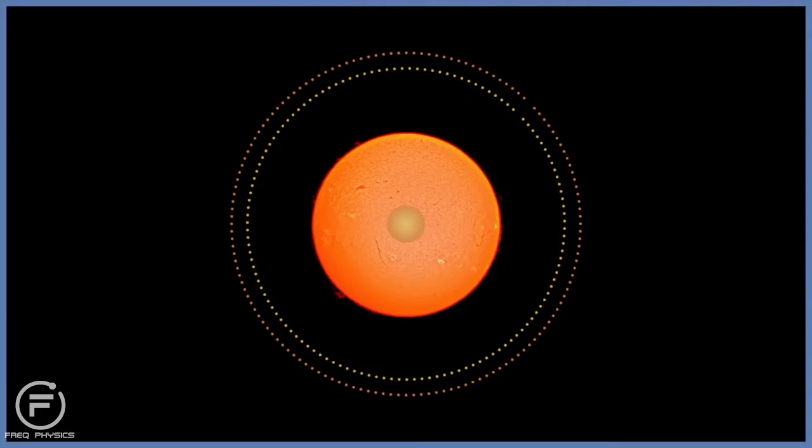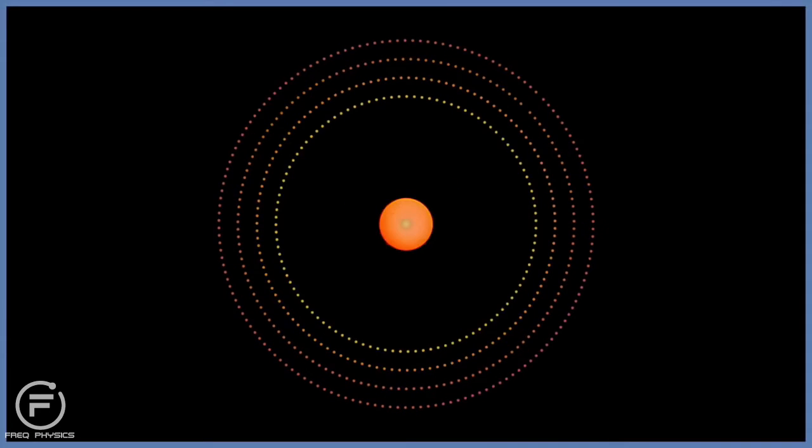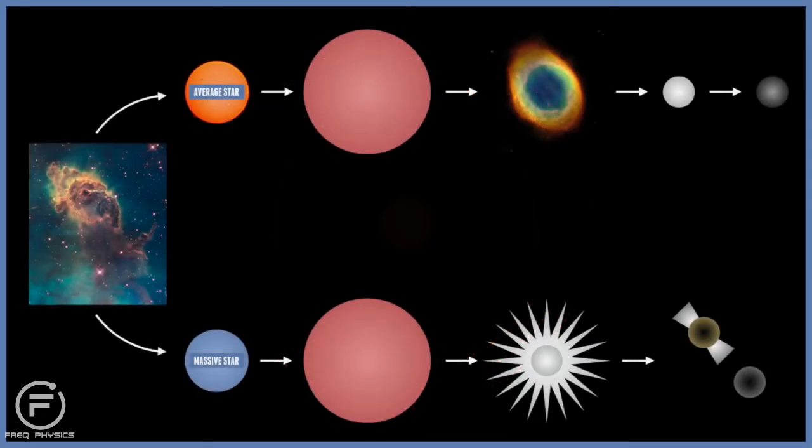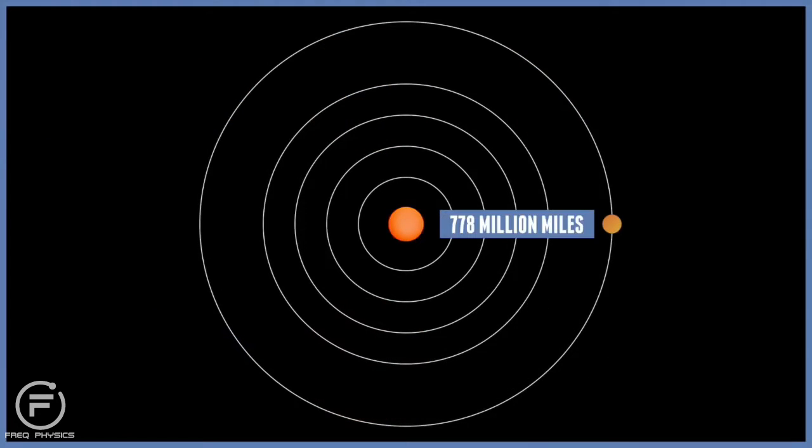As the outer layers of the star grow larger, they cool off, and become reddish in colour. A red star is cooler at its surface than a white star. Astronomers call these type of stars red giants, and they can become as large as the orbit of Mars or even Jupiter.